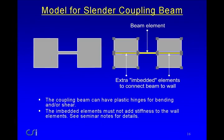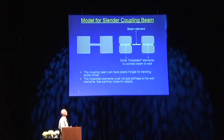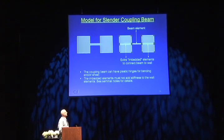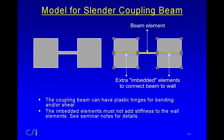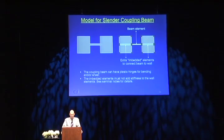Looking at the model for a slender coupling beam in PERFORM: you would model this with a beam element. In order to connect this beam into the wall element in PERFORM, you must have some embedded beams alongside it — otherwise it's basically a pin connection between the beam and the wall elements. The coupling beam can have plastic hinges for bending and/or shear, depending on whether it's controlled by shear or bending. The embedded elements shouldn't add any stiffness to the wall.